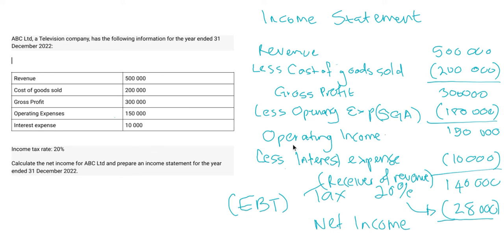That's the money you have to pay to the receiver of revenue. So this is how much you as a company have after you've taken care of all your other expenses. Your net income is $112,000. Thank you so much for watching — don't forget to subscribe and check out the other videos that explain your cost of goods sold, operating expenses, and operating income.